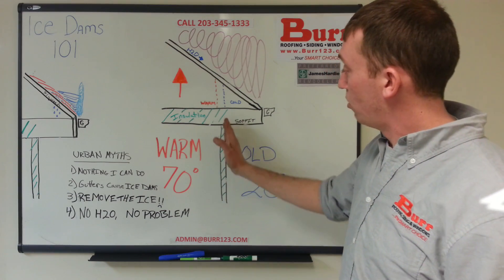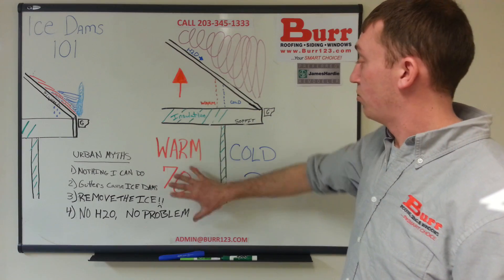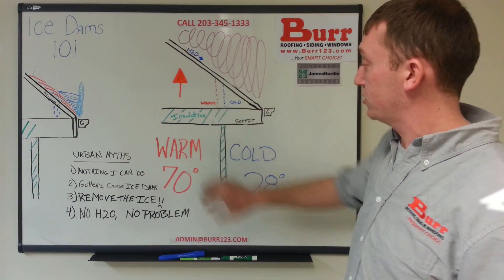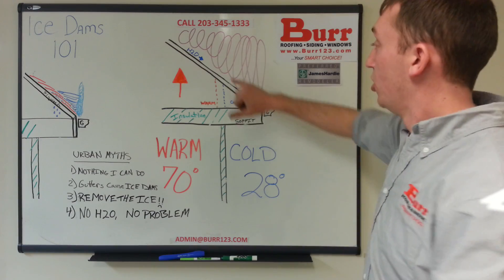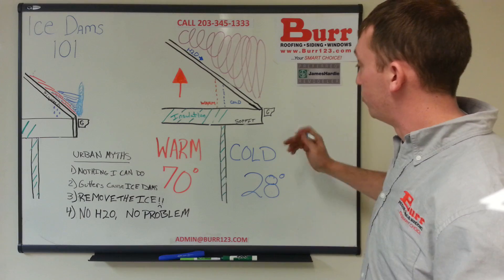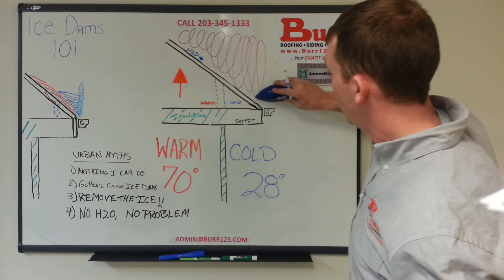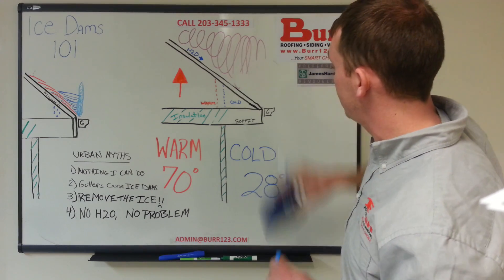The sidewall of your house represents a temperature gradient where you have warm air rising and cold air sitting outside. The water, when it gets beyond that point, will refreeze. As it refreezes, it forms an ice dam.